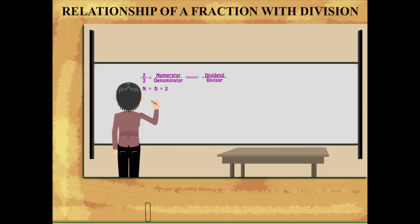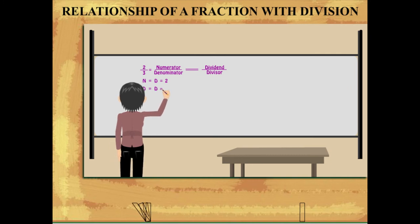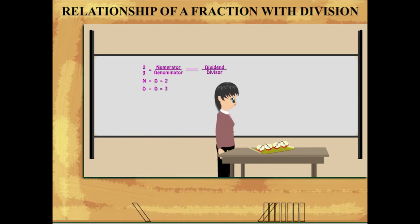The denominator is equal to the divisor that is 3. Nancy ma'am places 4 equal pieces of apples in a tray.